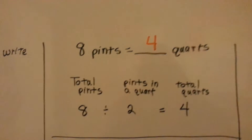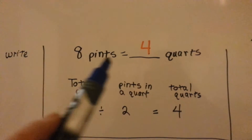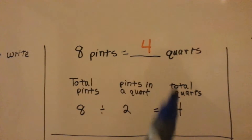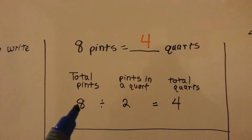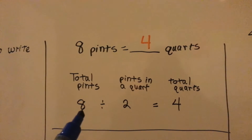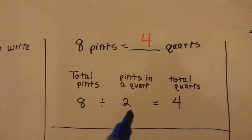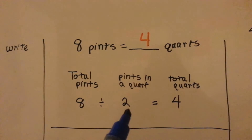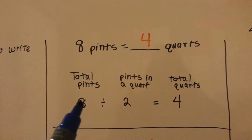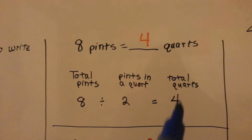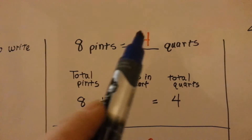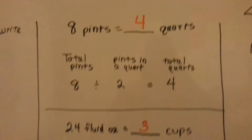Here's another one. We have 8 pints and we want to convert to quarts. If we have 8 pints and there are 2 pints in a quart, we divide 8 by 2 and we get 4 quarts.